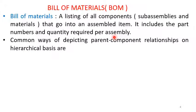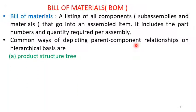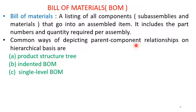Common ways of depicting parent-component relationships on a hierarchical basis include different representations. The most common ways are: first, the product structure tree, where the relationship is shown in the form of a tree with branches; second, in the form of an indented or indented Bill of Materials; and third, as a single-level Bill of Materials, where at a single level all the components are listed together.